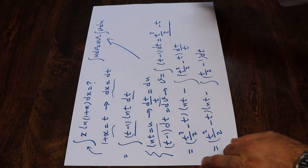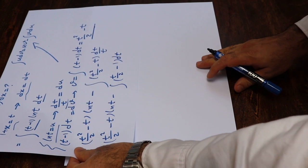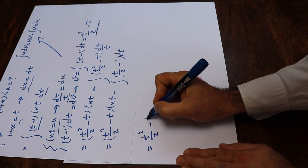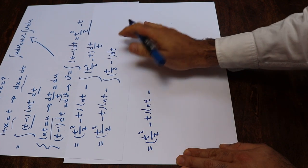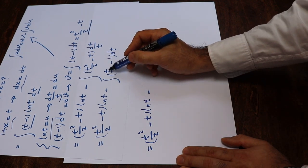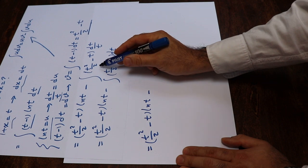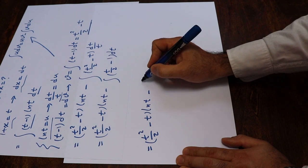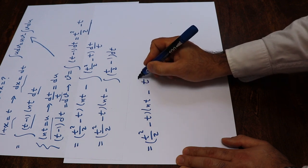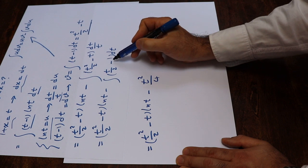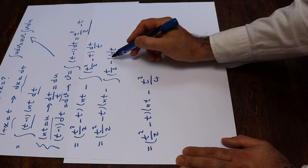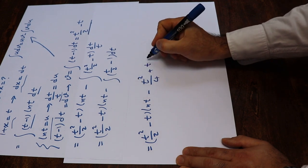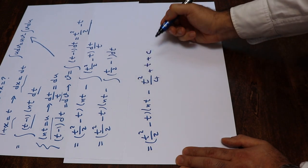Therefore, this equals (t squared over 2 minus t) times ln(t) minus the integral of (t over 2 minus 1) dt, which gives us minus t squared over 4 plus t, plus the constant of integration C.